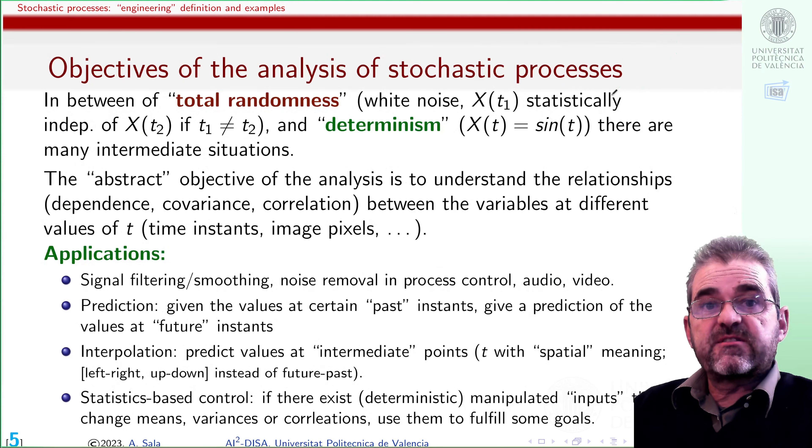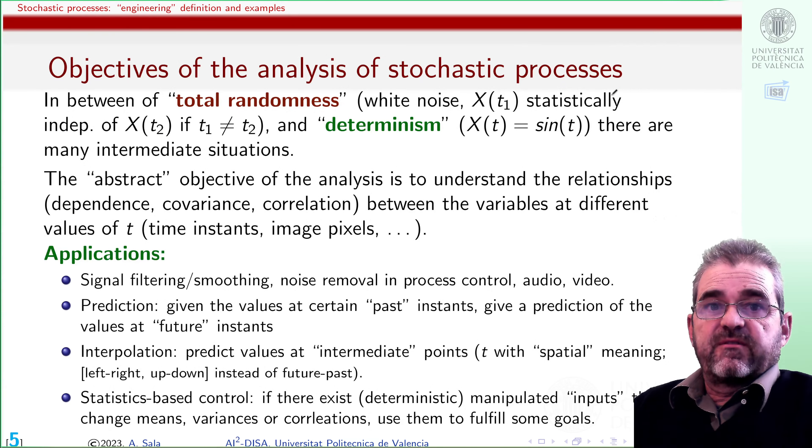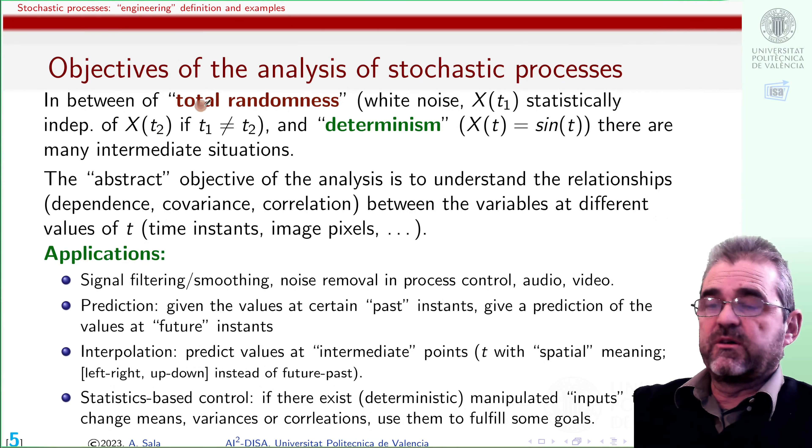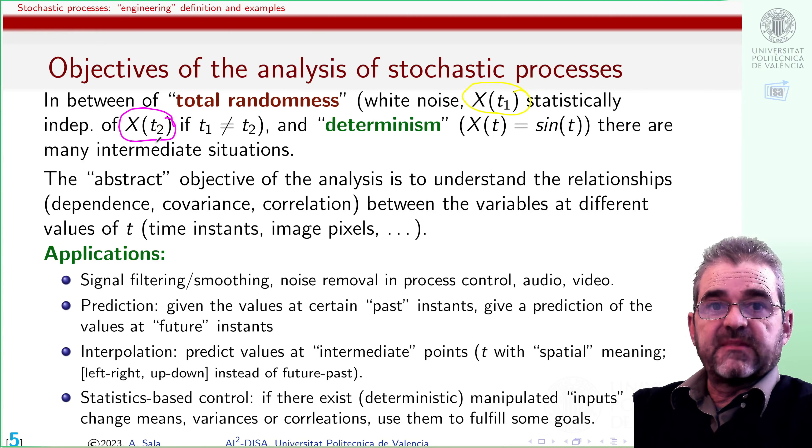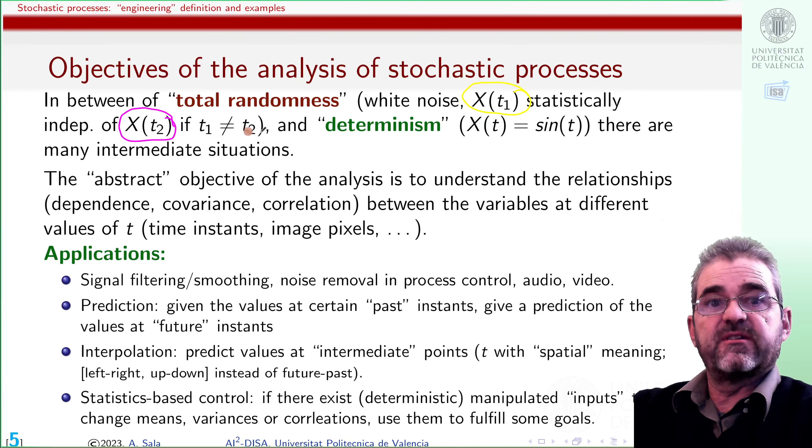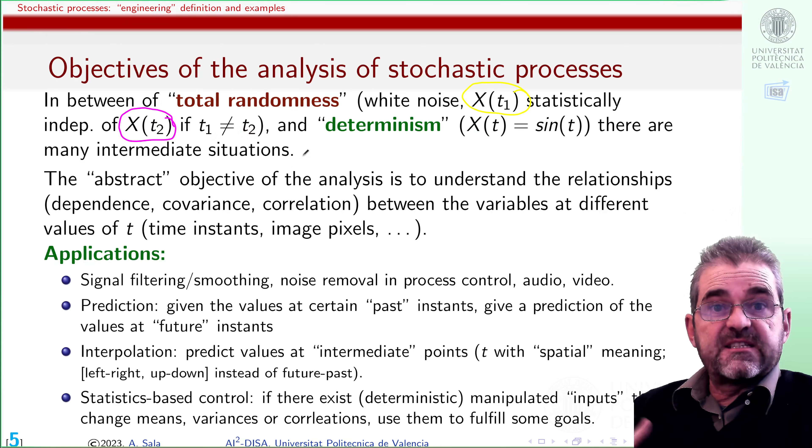So which are the objectives of all this? We have kind of two extreme cases. One could be total randomness, so that knowing the value of one variable at some instant, or pixel, or whatever, is useless to predict the value at any other instant or pixel. That's white noise. The variable at t1 and that at t2 are statistically independent, if they are referred to different instance or pixels, then in this case, the arranging of this set of random variables is useless.